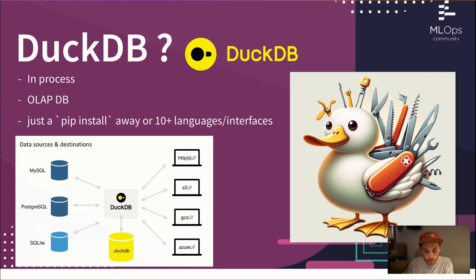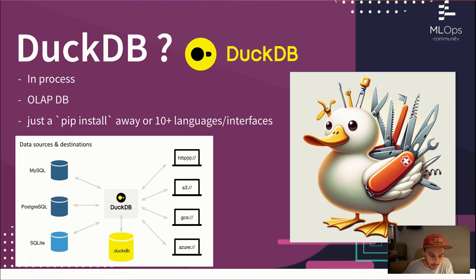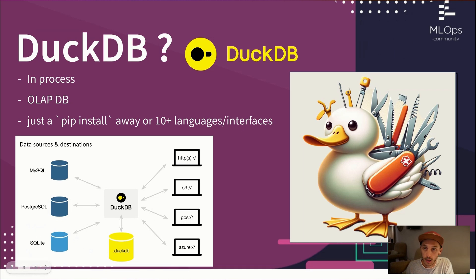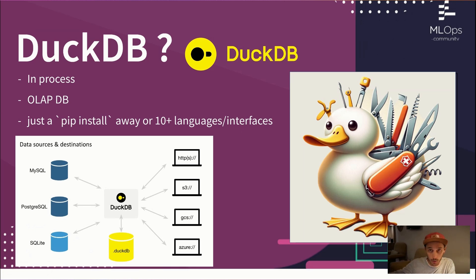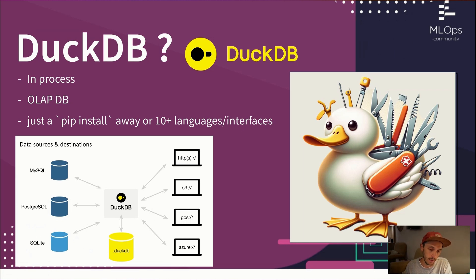DuckDB is really a Swiss Army knife — you can read and write to multiple sources easily. It's a single binary with no external dependencies. You can read Postgres tables directly from DuckDB, it has its own file format supporting ACID transactions, includes all metadata in a single file, and you can write to or read from common object storage. It supports Parquet, CSV, and table formats like Delta Lake or Iceberg.